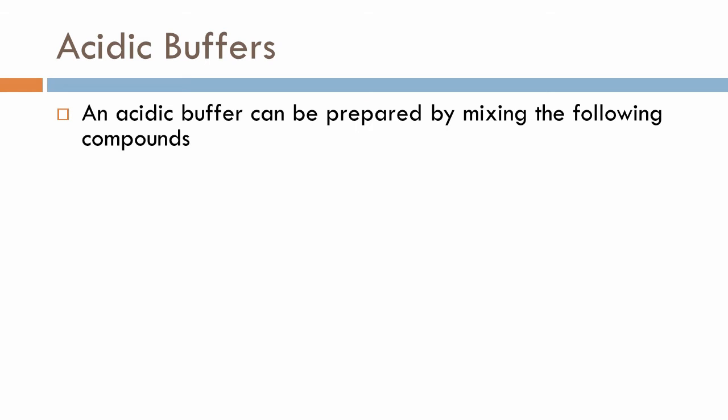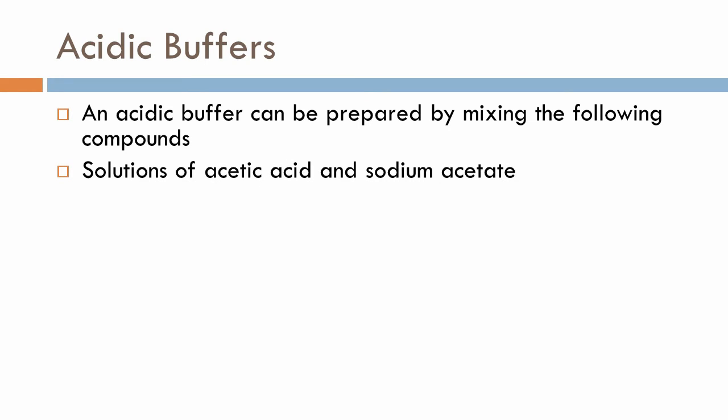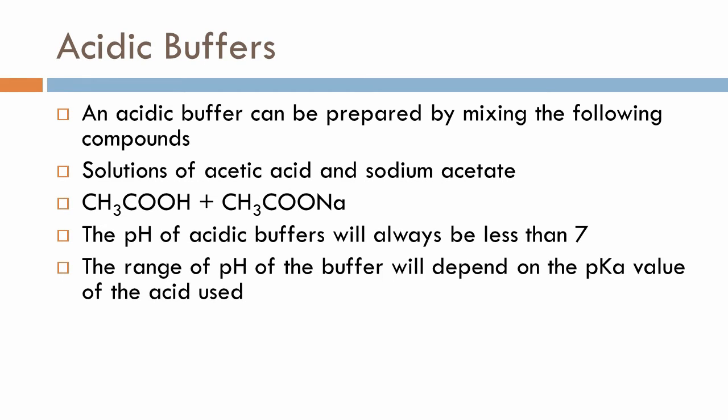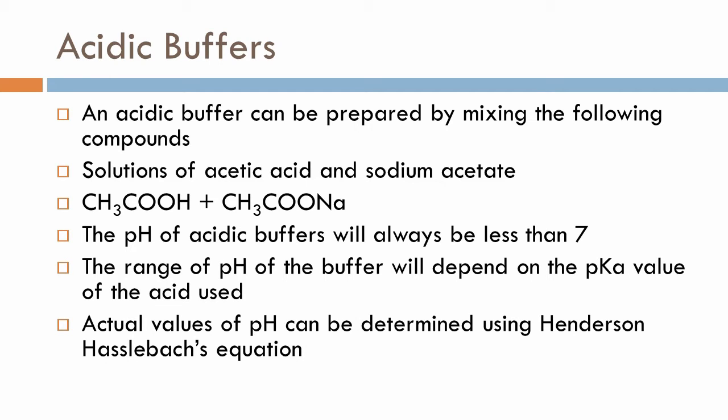Here is an example for preparing an acidic buffer. The choice of acid and salt depends primarily on your needs. If you want a pH of 4.7, a good choice is acetic acid because its Ka value is 1.8 × 10⁻⁵ and the pKa is around 4.7. Using the Henderson-Hasselbalch equation, pH equals pKa plus log of the concentration of the anion divided by the acid. You choose an acid whose pKa value is closest to the pH you need.